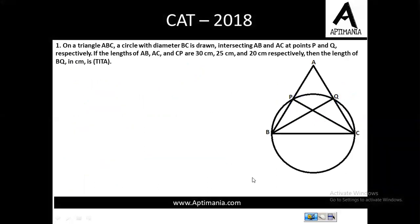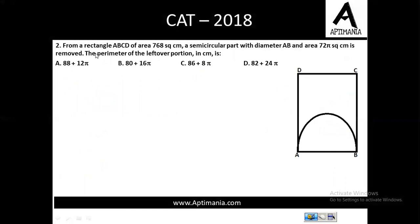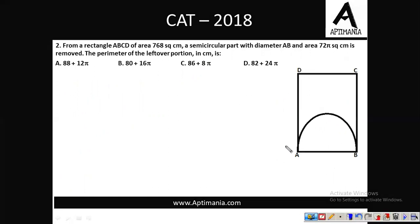Let's go ahead for the second question. From a rectangle ABCD of area 768 centimeter square, here a rectangle ABCD is given to you on the screen. Its area is 768 centimeter square. A semi-circular part with diameter AB and area 72 pi square centimeter is removed. So, this shaded region is a semi-circle with AB as the diameter. So first of all, this semi-circular area will be pi r squared by 2 which is given to you as 72 pi. Pi cancels, r squared will be 144 and r will be 12.